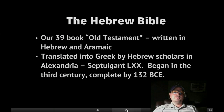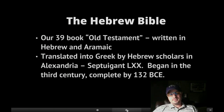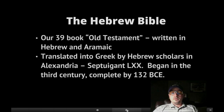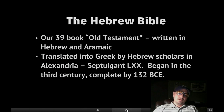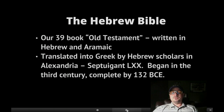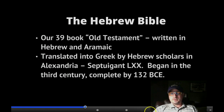Our 39-book Old Testament was written in Hebrew and Aramaic. It was translated into Greek by Hebrew scholars in Alexandria — a Greek city in Egypt named after Alexander the Great — and they came out with the Septuagint, begun in the 3rd century BC and completed in 132 BC. The Septuagint was also the Bible for Christians; Christians writing the New Testament in Greek were quoting the Septuagint.